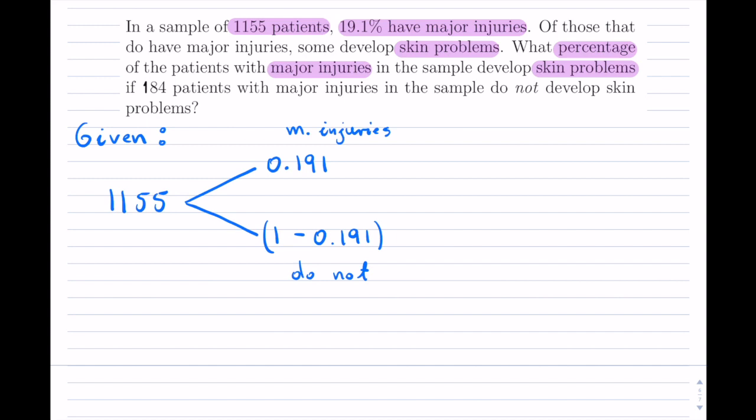Now they say, of those that do have major injuries, so that's these guys, some develop these skin problems. And now, of course, I don't know what percent develop because that's what they're asking me for. So I need to set the rate here, so rate of the skin problems. I'll just put RS for the rate of the skin problems. And on the opposite branch, those ones will be the ones with major injuries but do not have skin problems. And that will be 100% minus the rate of the ones that do have it. So again, these ones are with the skin problems, and these ones do not have the skin problems.